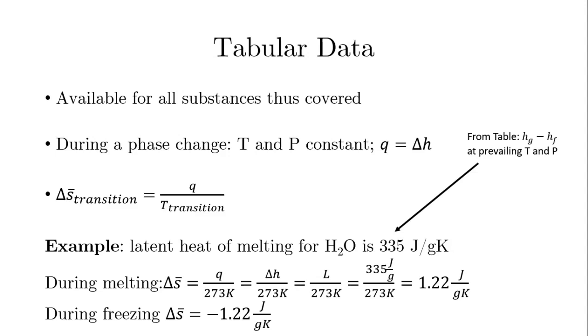So in this example, if we know that the latent heat of melting of water at 1 atm is 335 joules per gram Kelvin, that means that during melting, we can get the entropy of transition to be positive 1.22 joules per gram Kelvin. And during freezing, when the water freezes to ice, it will be exactly the same value, just the negative of it, it will be negative 1.22 joules per gram Kelvin.